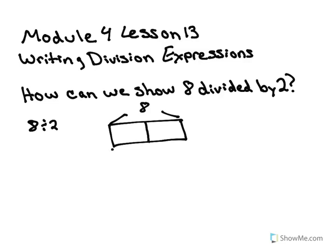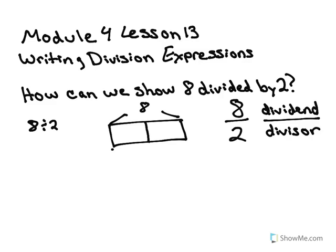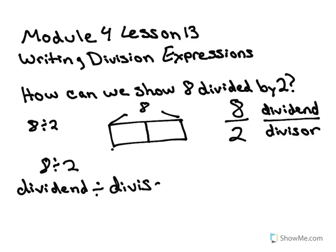The last way we can do it is by writing it as a fraction, as we've done in the past. We can say 8 divided by 2, where 8 is considered the dividend and 2 is the divisor. 8 is the dividend and 2 is the divisor.